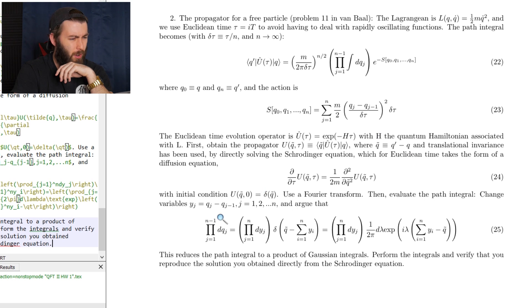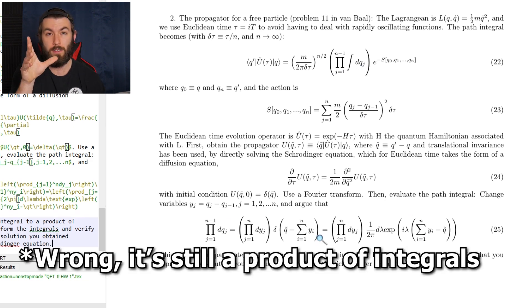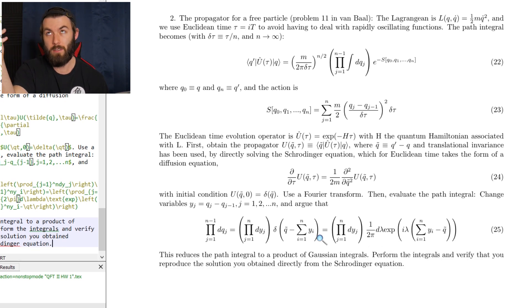And then we're told to argue that this product of measures, or whatever this is supposed to be, is equal to this crazy thing. This reduces the path integral to a product of Gaussian integrals. So here, we have a product of integrals, right here. And this is saying that instead, we can have an integral of products, where those products are Gaussians. And a Gaussian is just proportional to e to the minus x squared. So that's the path integral.